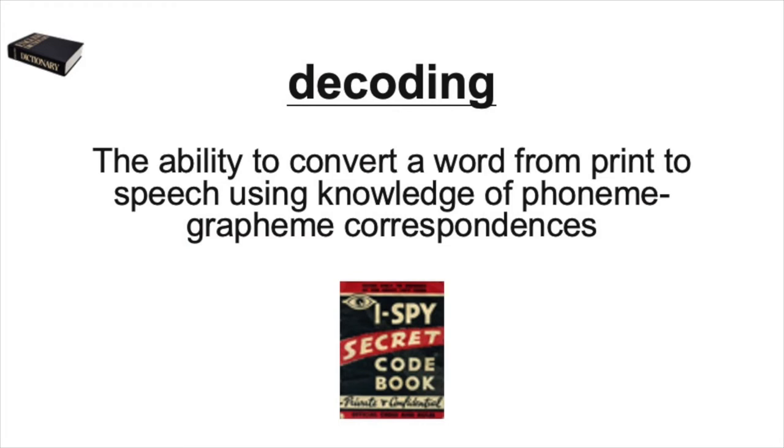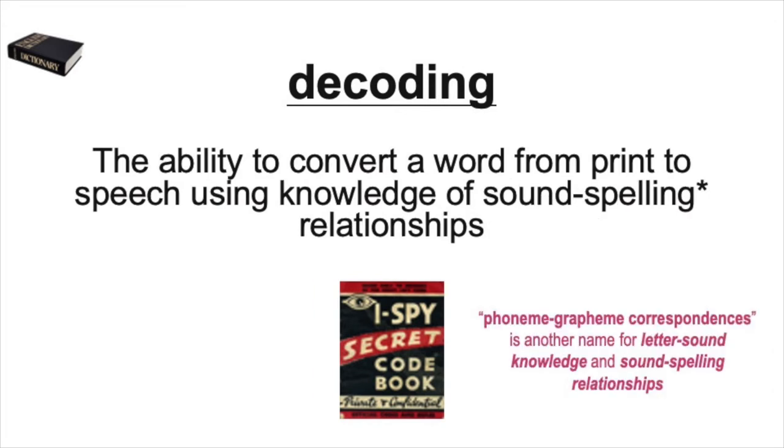Decoding is the ability to convert a word from print to speech using knowledge of phoneme-grapheme correspondences. You'll see this word a lot as you continue to learn about reading and literacy development. The term phoneme-grapheme correspondences means the same thing as letter-sound knowledge or sound-spelling relationships. One way to think about phoneme-grapheme correspondences is as the code that we need to teach students in order to help them learn to read words independently or decode without relying on pictures or other cues.